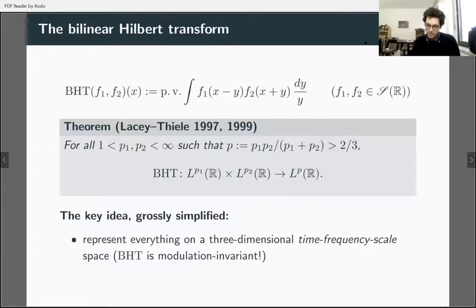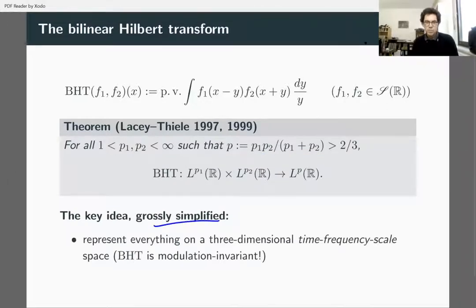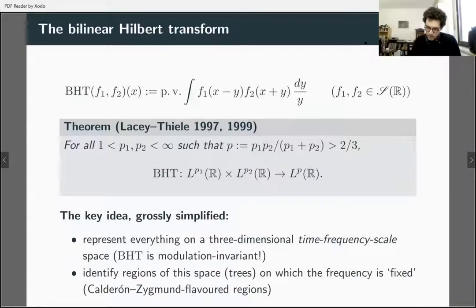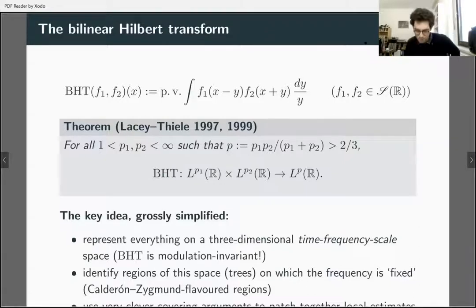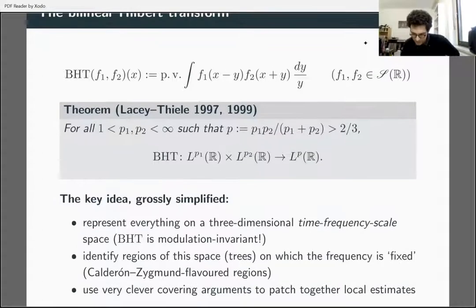The key ideas are the same again: you represent everything in a time-frequency-scale space. The bilinear Hilbert transform has the same translation, dilation, and modulation invariances as the Carleson and variational Carleson operators. You identify regions of the space where the frequency is fixed and the analysis is Calderón–Zygmund flavored. Then you use very clever covering arguments — I can't stress enough how clever these covering arguments are.